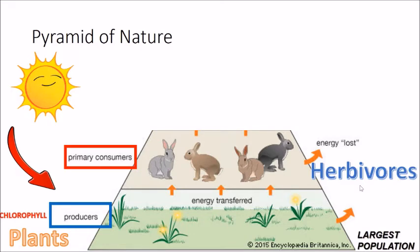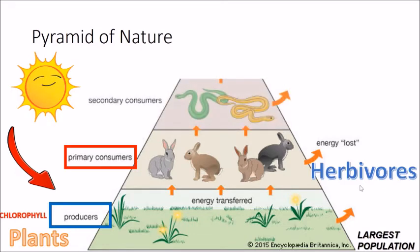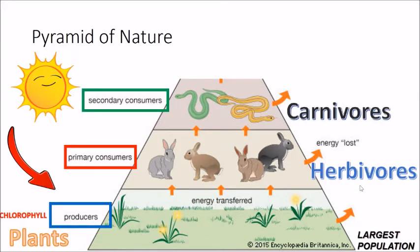As we move up the pyramid, we come to secondary consumers. Secondary consumers are carnivores, which means they eat animals only. But there are also omnivores, which means they eat plants and they also eat animals.